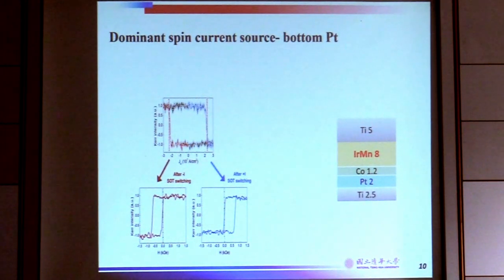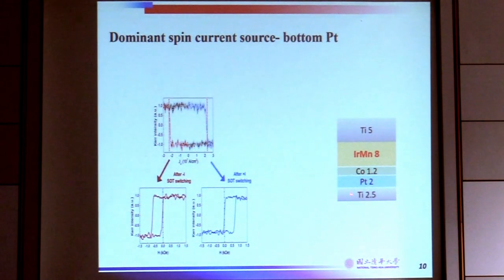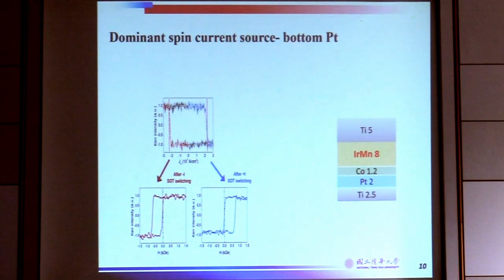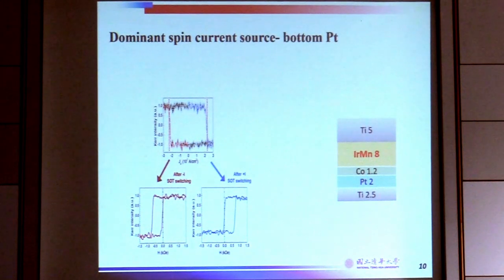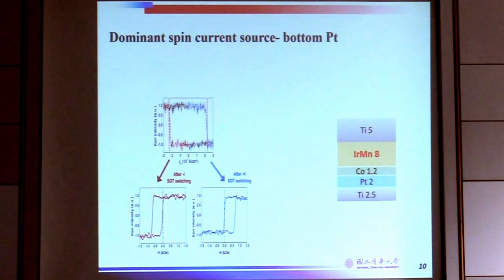We also changed to different antiferromagnets — for example, using IrMn and changing the bottom layer from platinum to palladium. Ideally, as long as we have a spin current source (here, platinum) and a perpendicular exchange bias, we can always use spin-orbital torque to switch the exchange bias.